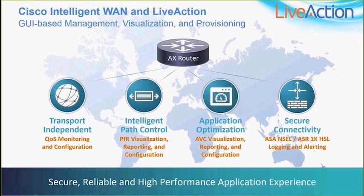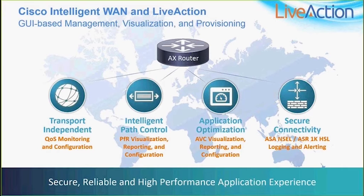In the transport independence area, LiveAction provides QoS monitoring and configuration capability for DMVPN tunnels. In the intelligent path control area, LiveAction is used for PFR v3 visualization, reporting, and configuration. In the third pillar — application optimization — LiveAction provides AVC visualization, reporting, and configuration. In the fourth pillar — secure connectivity — you can use LiveAction to see and visualize ASA and ASR 1K high-speed logging alerts.